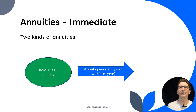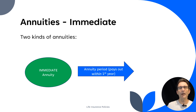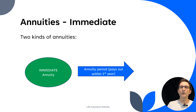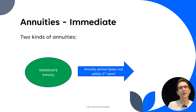An immediate annuity is the term for that single pay product. People come into a lump sum of money or have money in a different financial product and want to turn that into an annuity. With the immediate annuity, the annuity period is going to pay out within the first year — it can be as soon as within the first few weeks or 30 days of starting the annuity. It can begin annuitization almost immediately. You have an amount of money set up and you can start receiving the benefits relatively quickly.